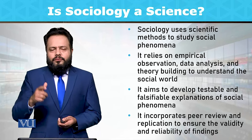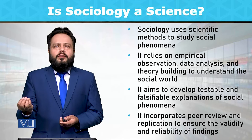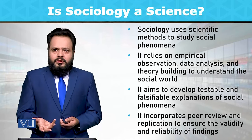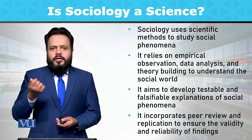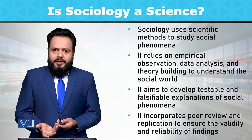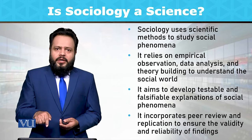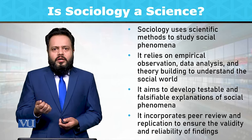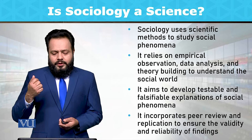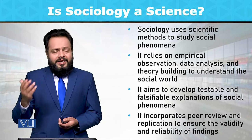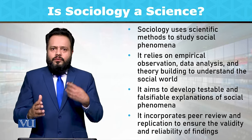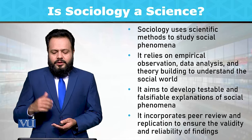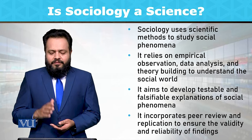This whole process from natural sciences is replicated in social sciences, particularly in sociology. If we claim that sociology is a science, we need to see whether it uses the scientific method as an approach to explore knowledge. It definitely relies on empirical observations, data analysis, and theory building — so for this reason we consider sociology a scientific discipline that aims to develop testable and falsifiable explanations of social phenomena.